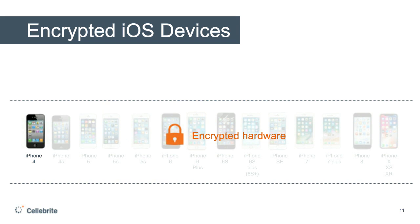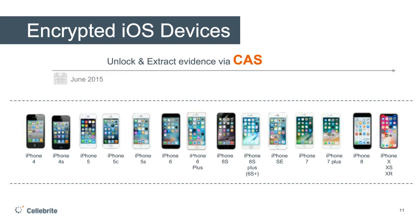Basically, this slide explains the hardware encryption in Apple that was introduced about four years ago. Before the iPhone 4S, you could do physical extraction and decoding. But since the iPhone 4S and other devices that entered the market, you can't get into the device due to hardware encryption. However, since June 2015, Celebrite can obtain the full file system from any Apple device running any iOS version. This type of extraction is available via our Advanced Services, and you can decode the data using Physical Analyzer.